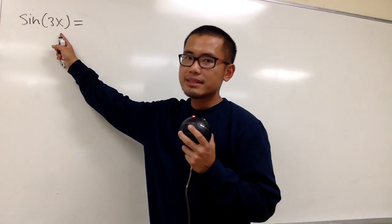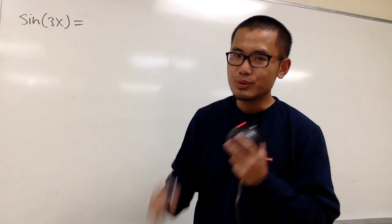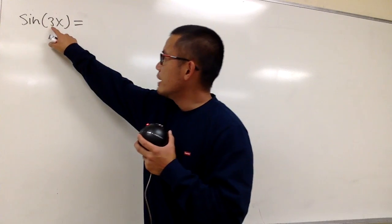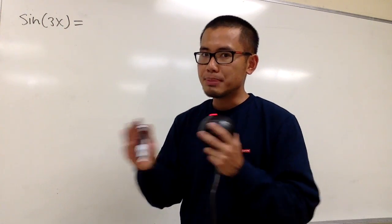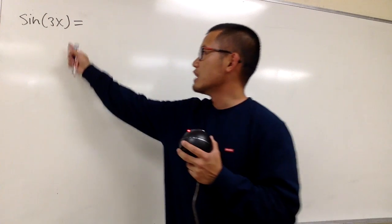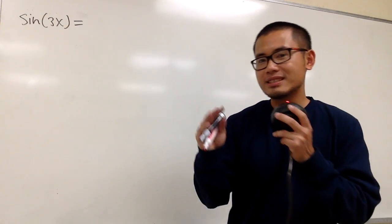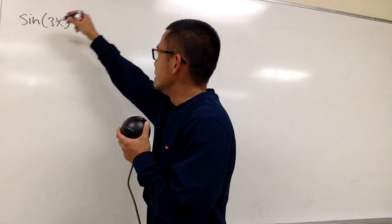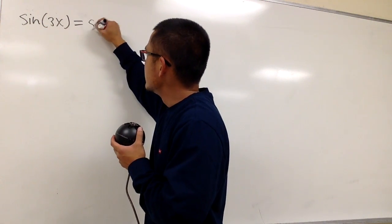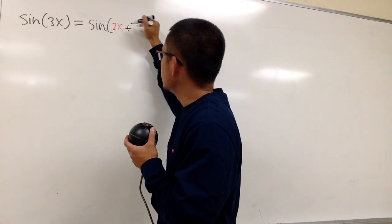We are going to write sine of 3x in terms of sine of 1x only. To do so, we have to look at 3x as something plus something. We can do it as 2x plus x, that will give us 3x. I will show you this as sine of 2x plus x.